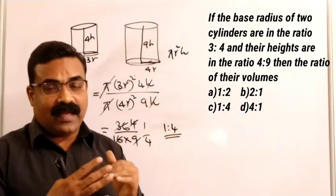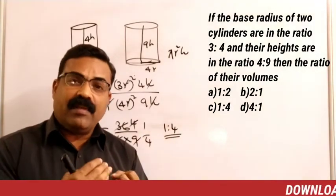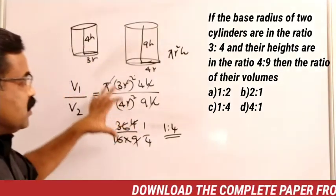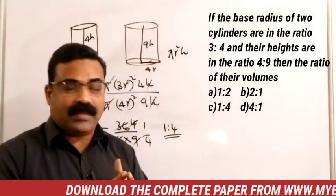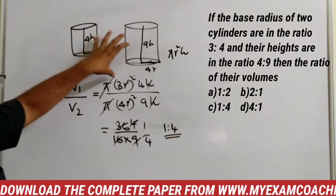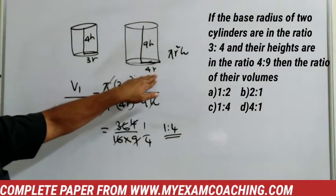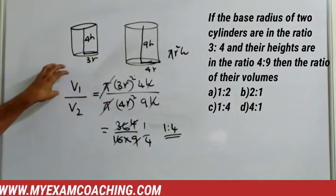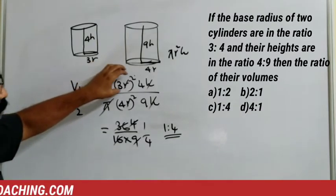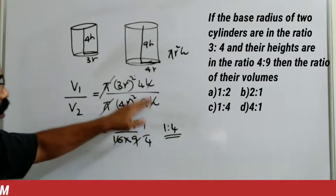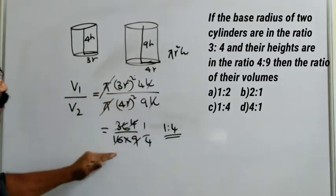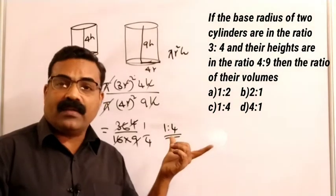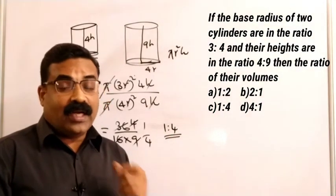To summarize: two cylinders — first with radius 3r and height 4h, second with radius 4r and height 9h. Volume₁/Volume₂ = π(3r)²(4h) / π(4r)²(9h). Cancelling h, r², and π, the remaining ratio is 1:4. So the required ratio is 1:4. Mark the correct option.